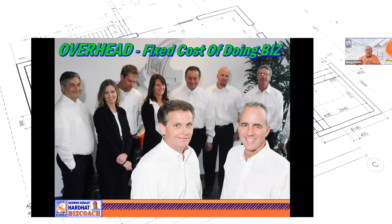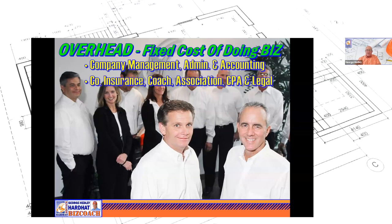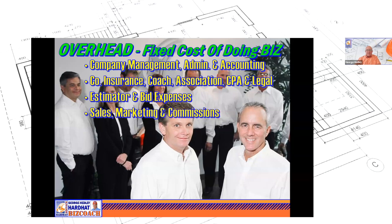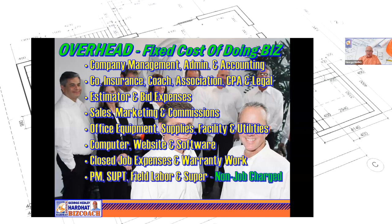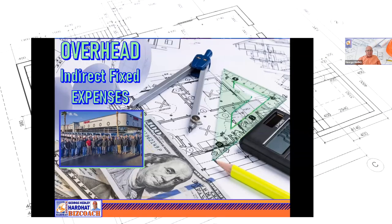Fixed costs of doing business include: management, accounting, insurance, CPA, legal, estimator, bidding expenses, sales, marketing, commissions, office equipment, supplies, utilities, computer, website, software, closed job expenses, warranty work, non-job-charged items, anything that happens in the job — project manager, superintendent, field labor, supervisors, foreman. The key is to keep it low. So let's figure out what your expenses are to stay open.